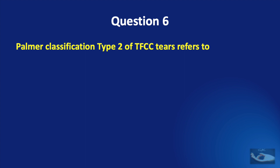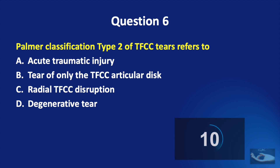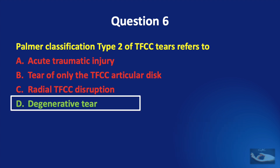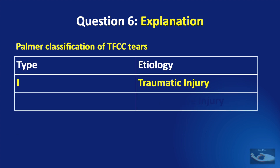Question number 6. The Palmer classification type 2 of TFCC tears refers to: acute traumatic injury, tear of only the TFCC articular disc, radial TFCC disruption, or degenerative tear? The answer is degenerative tear. The TFCC acts as a buffer and stabilizer between the ulnar head and the ulnar segment of the proximal carpal row. Under the Palmer classification, type 1 refers to traumatic injury and type 2 refers to degenerative injury.